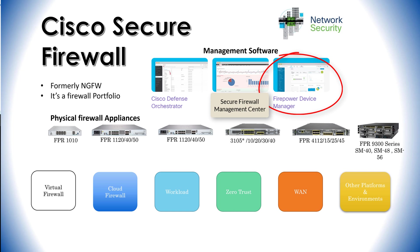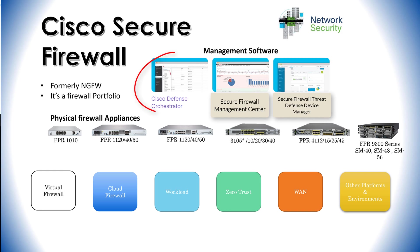On the right we see Firepower Device Manager, which has also been renamed to Secure Firewall Threat Defense Device Manager. This is a local on-box management option for situations where you do not have an FMC — no centralized management service — so you manage it directly with its local management software on the firewall itself. It's a great option for small-scale deployments. There is also Adaptive Security Device Manager (ASDM) for the older ASA firewall software, which is the equivalent to the Device Manager for FTD software.